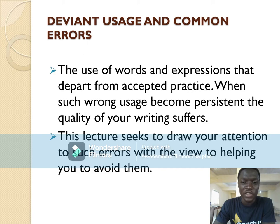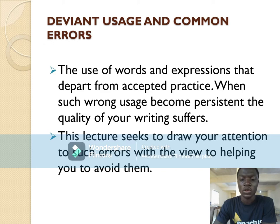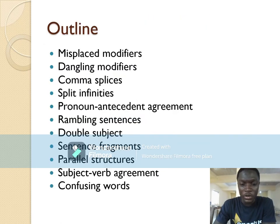Today we are going to be talking about deviant usage and common errors. Deviant usage is something that usually occurs when we as students use words wrongly and inappropriately. The use of words and expressions that depart from acceptable practice — when such usage becomes persistent, the quality of our writing suffers. This lecture seeks to draw our attention to these errors and help us avoid them.